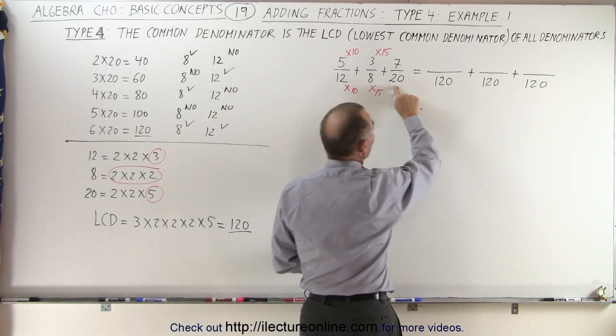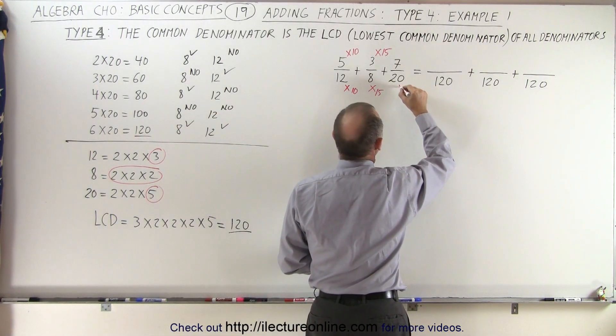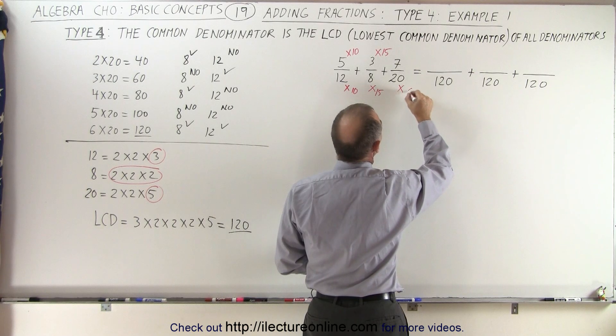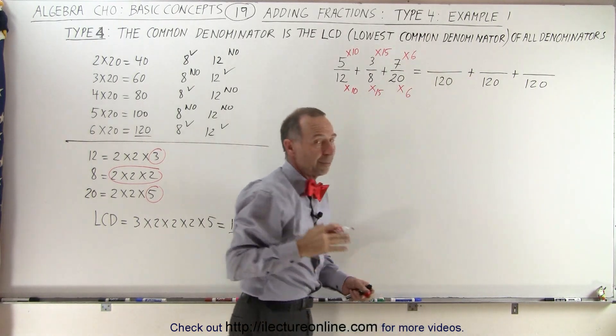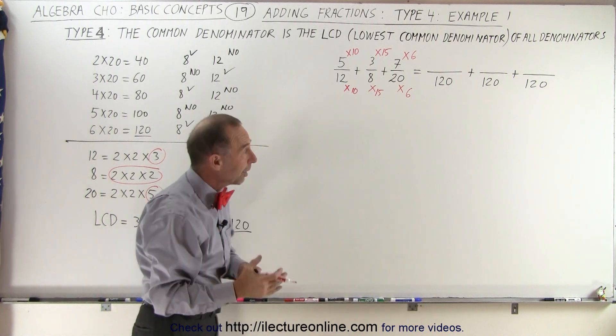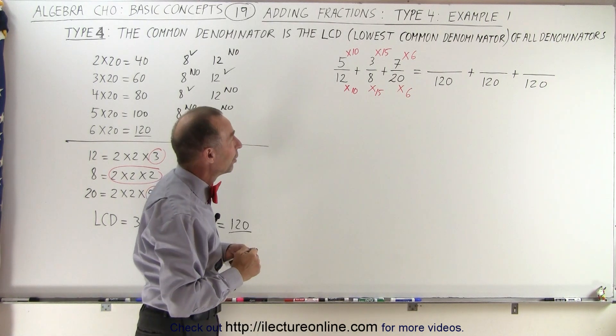And finally, to go from 20 to 120, we have to multiply this denominator by 6, which means we have to multiply the numerator by 6 as well. Remember, whenever we do it to the denominator, we must do exactly the same to the numerator.